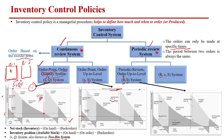The last system is the R,s,S system. Here, after a fixed review period R, we check whether inventory has reached the reorder point 's'. If it has, we place an order to bring inventory up to the pre-decided maximum level, capital S. The inventory position is calculated as: quantity on hand, plus quantity on order to meet demand during lead time, minus any back orders.